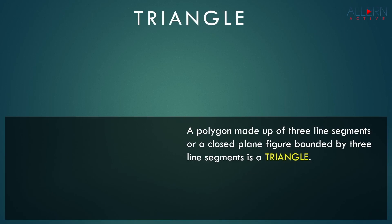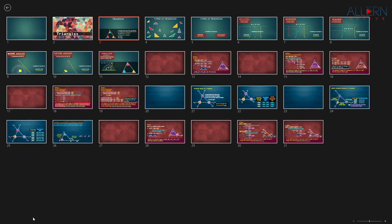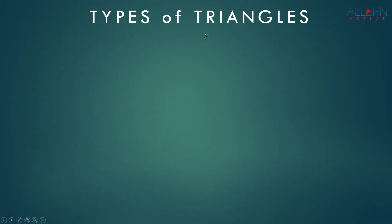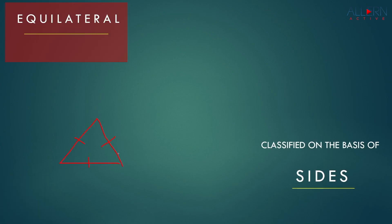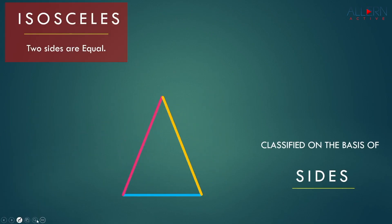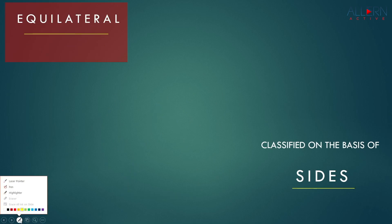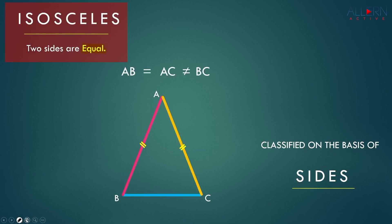Now let's see some additional features of Teacher's Edge that a teacher can use while teaching. If you want to go to a particular slide, go to the bottom left of the screen and click that icon, then select the desired slide. The pen tool can be used to annotate on the screen, and the highlighter can be used to highlight a particular part of the presentation on the screen. The laser pointer can be used to hover over the screen.